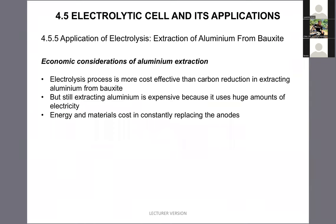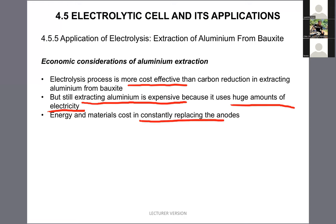Economic considerations for aluminium extraction: electrolysis is used because it is more cost effective. However, extracting aluminium is still expensive because it requires a huge amount of electricity — a large amount of energy is needed. It is still considered reasonable, though the material cost involves constantly replacing the anode. This concludes the last part of the chapter.